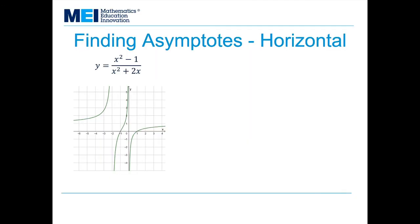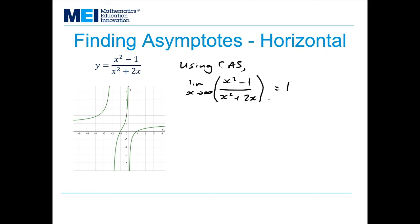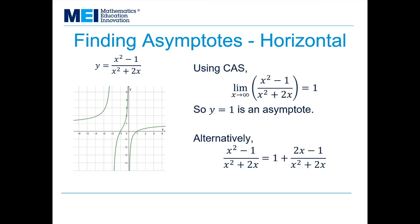Using CAS, the limit as x tends to infinity of x squared minus 1 over x squared plus 2x is equal to 1. So the line y equals 1 is an asymptote.